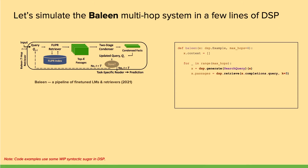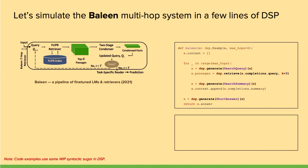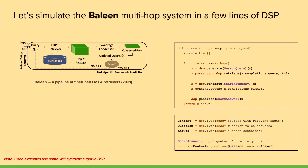Once we have a search query, we find three relevant passages, generate a search summary based on those passages, and append it to the context. After iterating, we generate a short answer to the original question. DSP has a mechanism for specifying user-defined types — for example, context as a list of passages, question and answer types — which can be combined into a signature describing the program behavior.